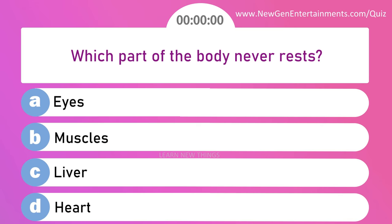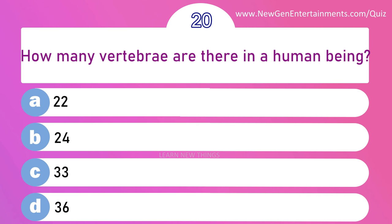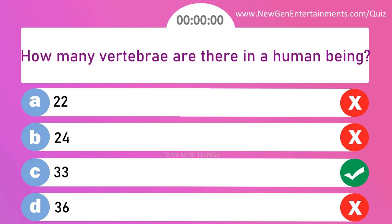How many vertebrae are there in a human being? Options are: A) 22, B) 24, C) 33, and D) 36. Answer is option C: 33.